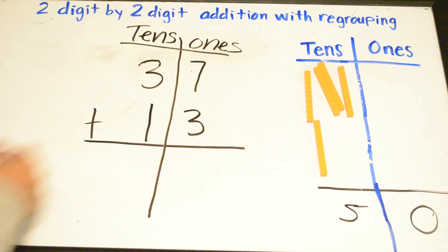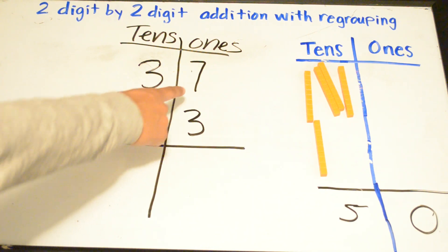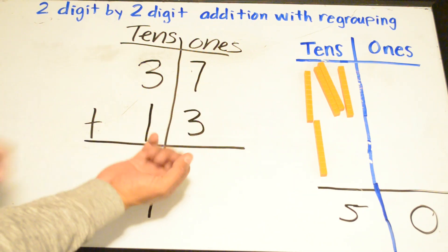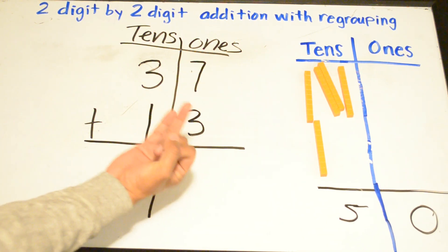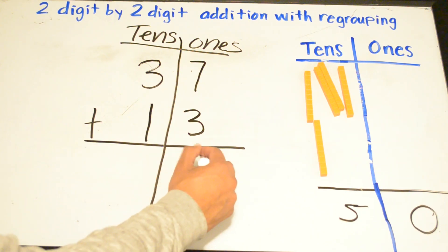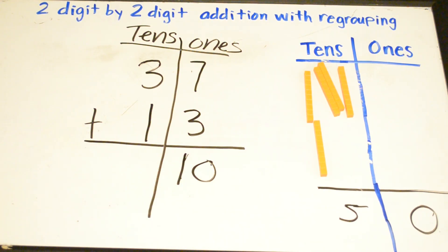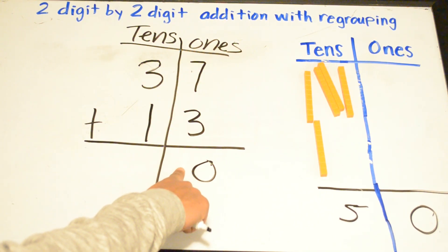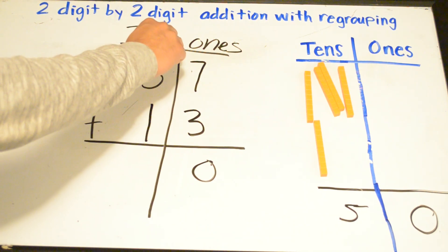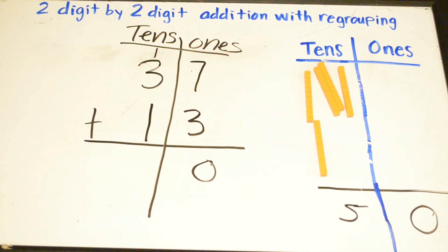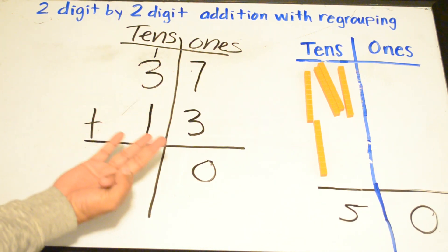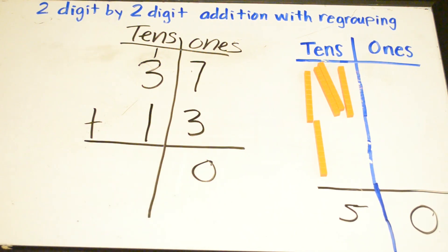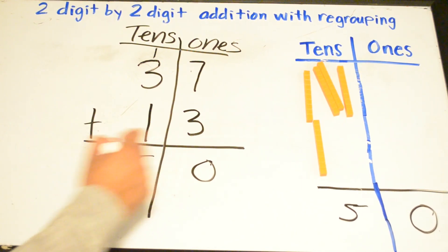Doing it the other way: draw a line down the middle — tens and ones. We have seven in the ones; seven is the biggest number, so we say seven and add three more: eight, nine, ten. We cannot have more than nine in the ones place, so we take that one and add it to the tens place. Three plus one more is four, plus one more is five. Our answer is 50.